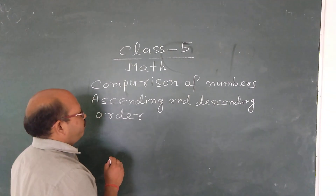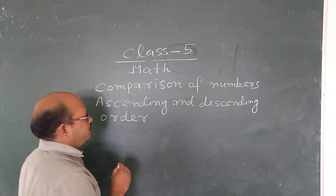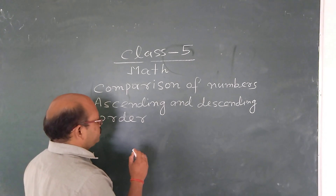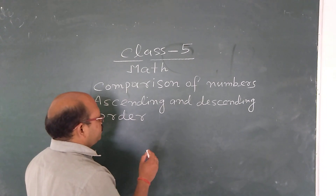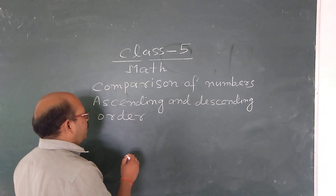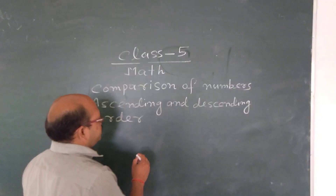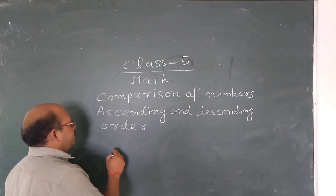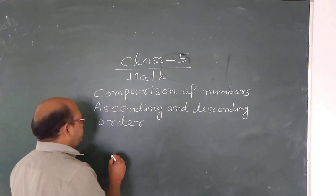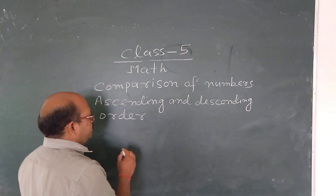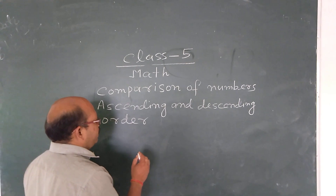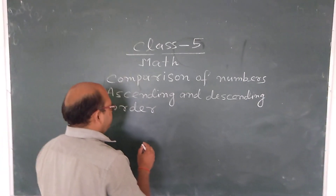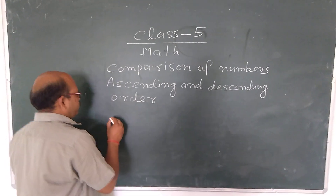In ascending order, we write the smallest number first, then we write numbers greater than the smallest, and last we write the greatest number. In descending order, first we write the greatest number, then smaller numbers, and last we write the smallest number.